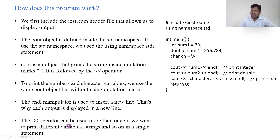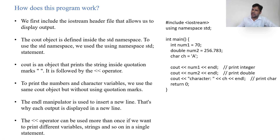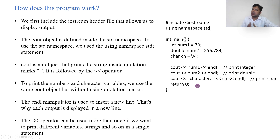The extraction operator can be used more than once if we want to print different variables, strings, and so on in a single statement. For example, you can chain three extraction operators: first a character string, then a variable, then endl for a new line, then more text. So you can use the extraction operator multiple times to join different text together. For example, it can print 'character A is nice'.